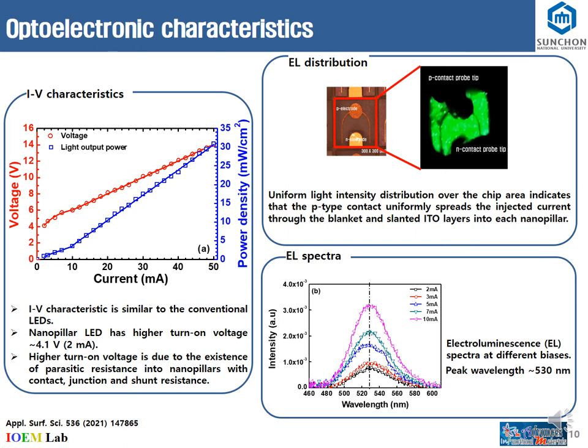In the optoelectronic characteristics, the green nanopillar LED has similar I-P characteristics as the planar LED. However, it has a higher turn-on voltage due to parasitic resistance. The nanopillar green LED has uniform light intensity distribution with no dark spots in the emission, which confirms that there is no shorting of nanopillars during deposition of the P-contact. The peak wavelength of the green LED is about 530 nanometers.